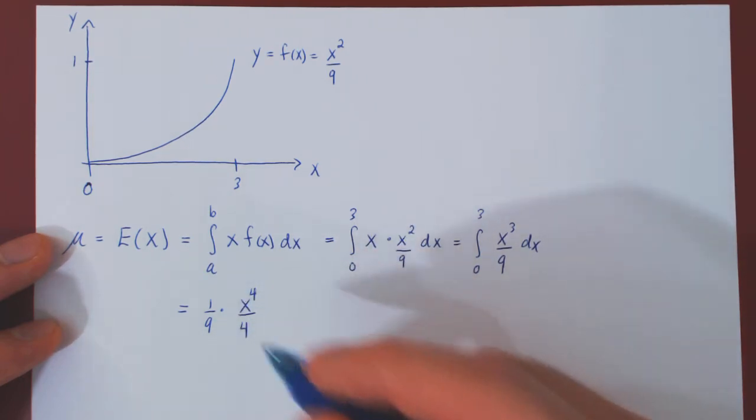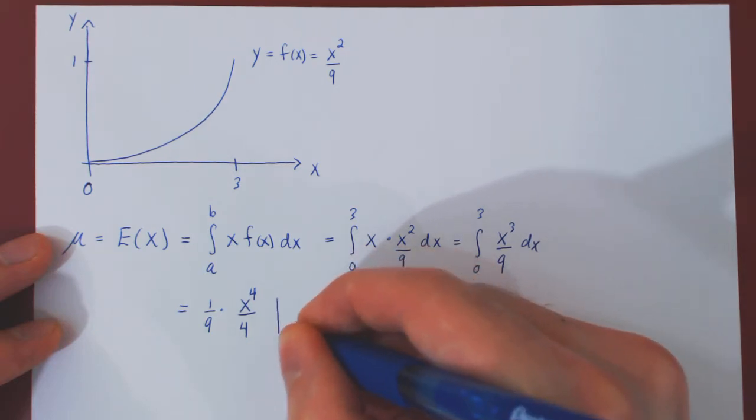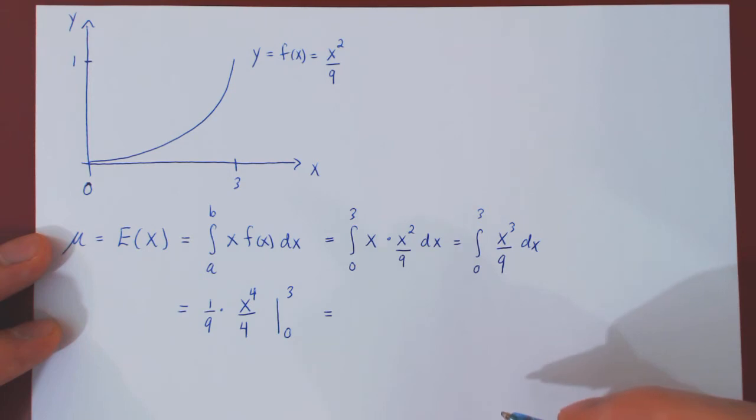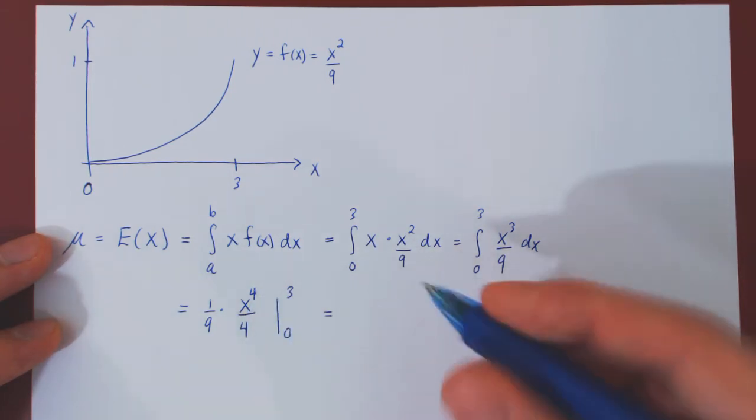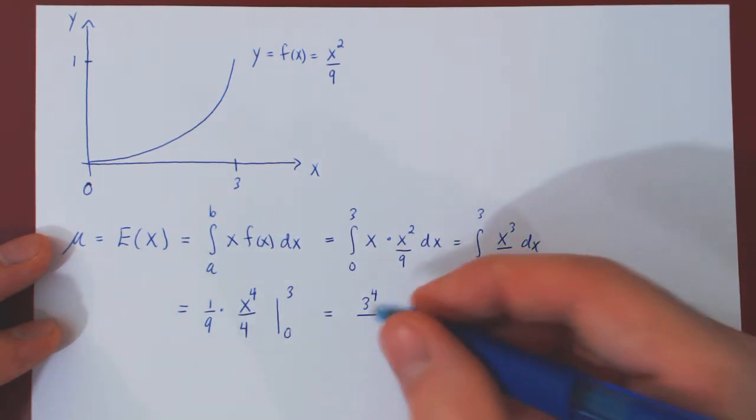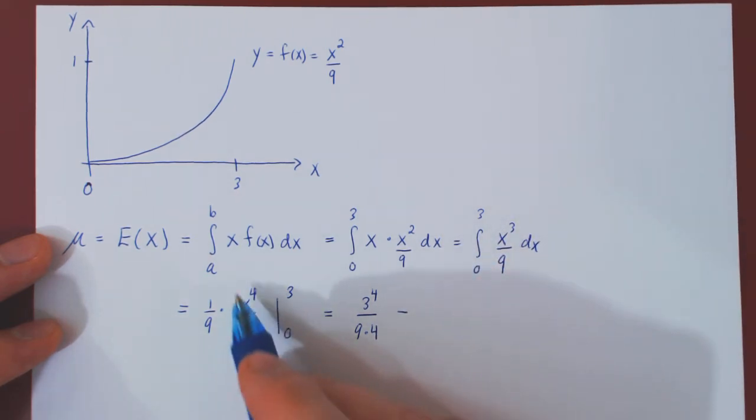We now have the antiderivative, which we must evaluate from 0 to 3. This will give us 3 to the 4 over 9 times 4 minus the antiderivative at 0, which is of course 0.